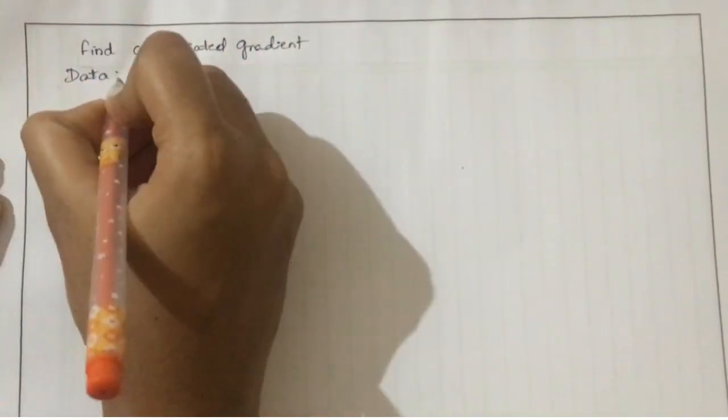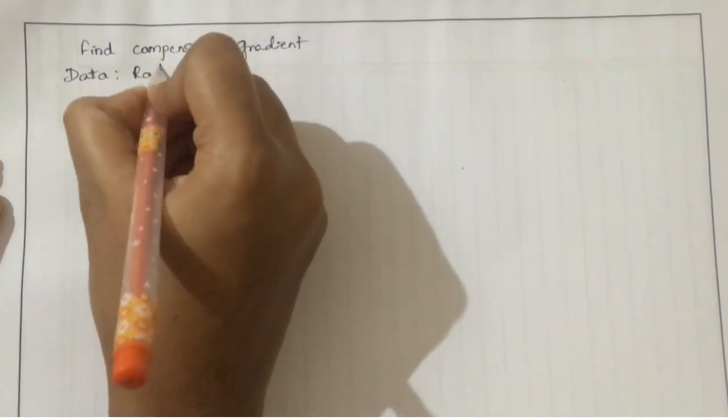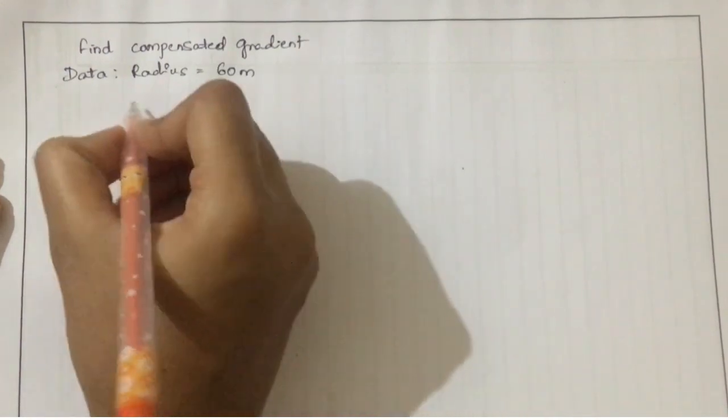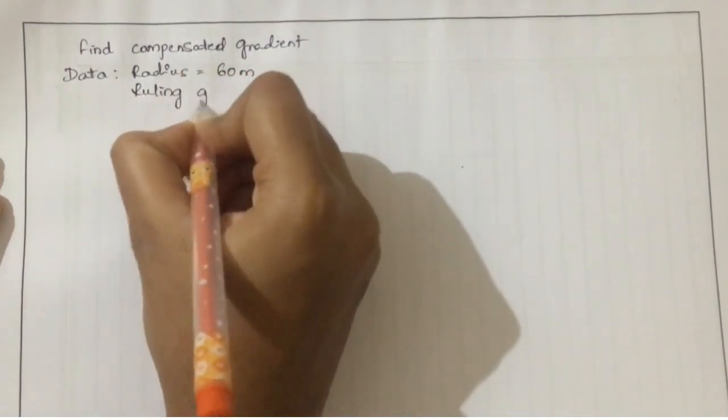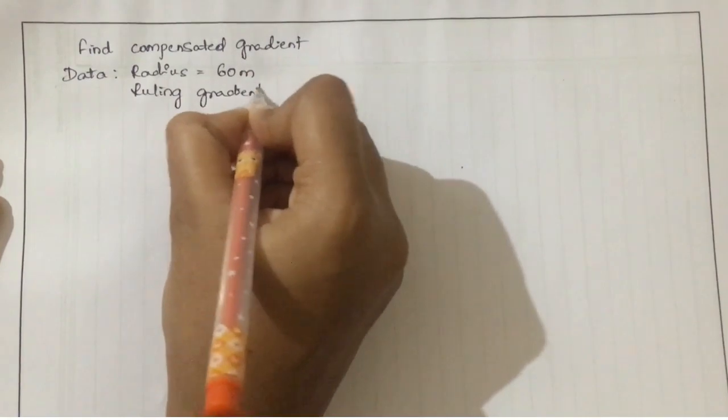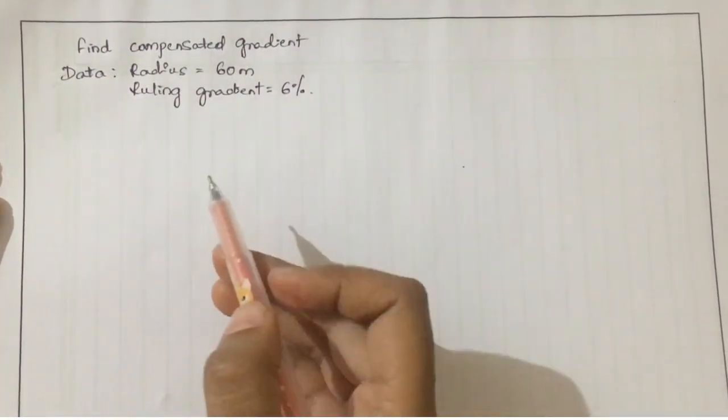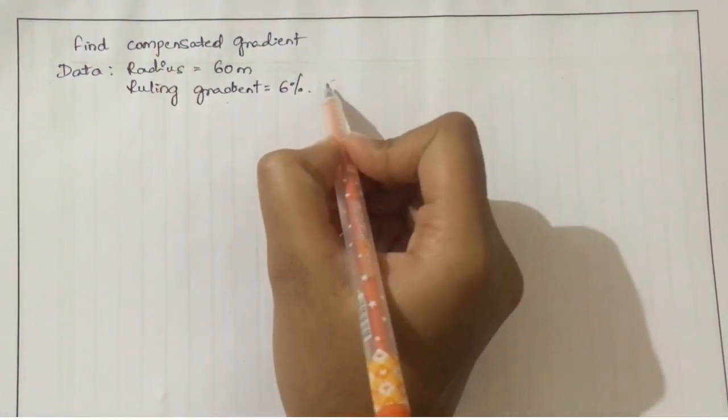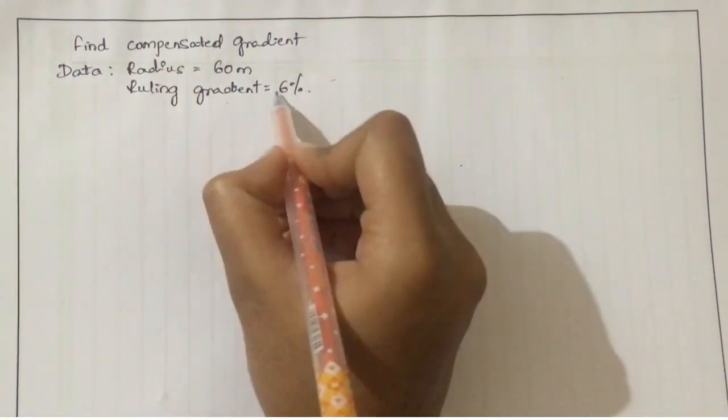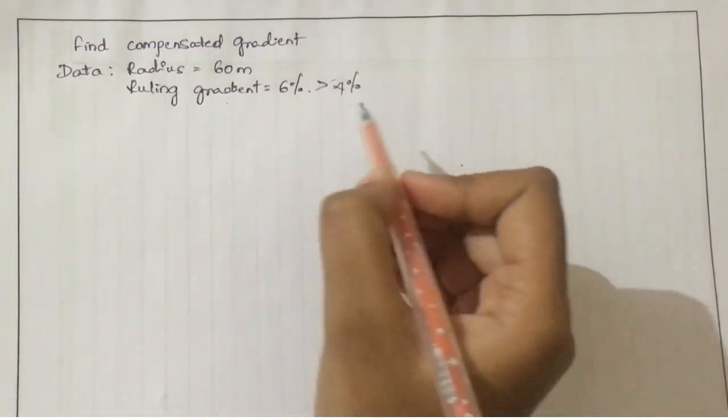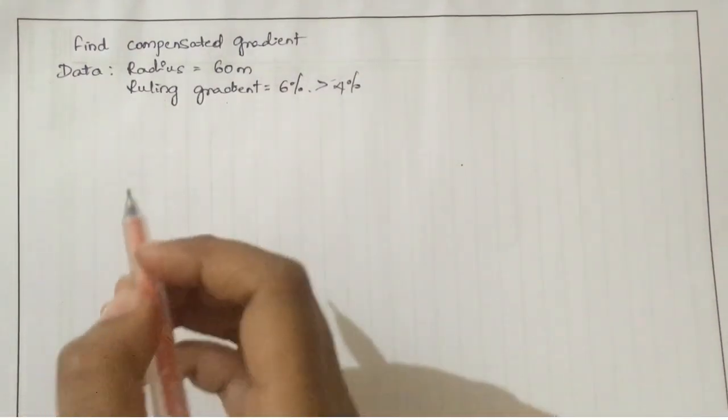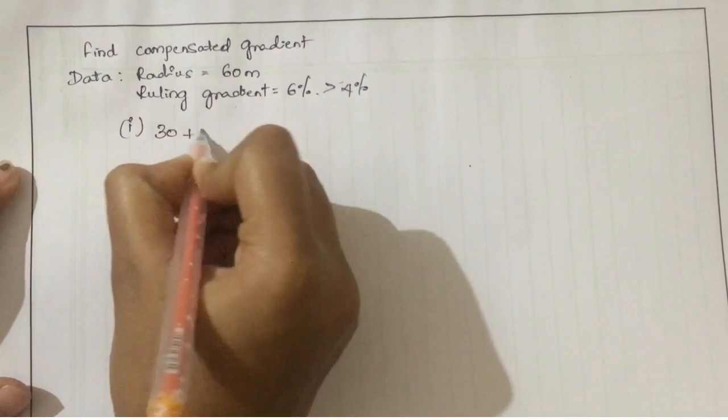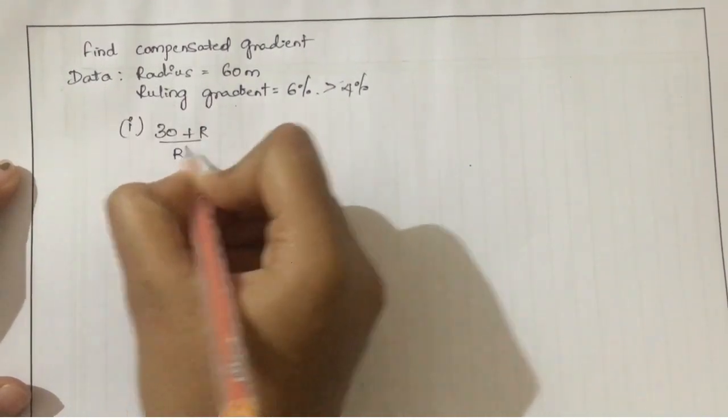The data given are: radius of the curve is 60 meter and the ruling gradient is 6%. We only compensate gradient when the ruling gradient is greater than 4%. Since the ruling gradient is greater than 4%, we are going to compensate it.